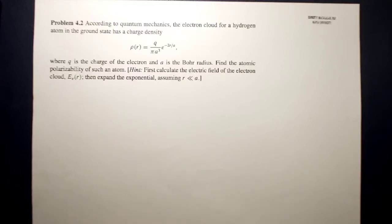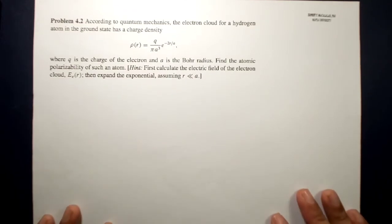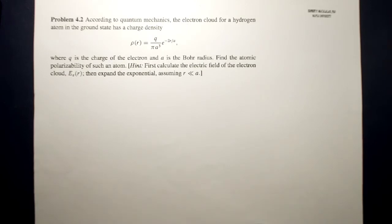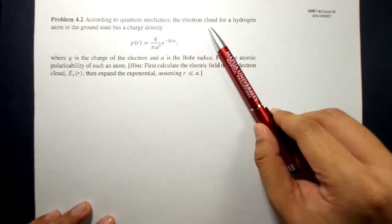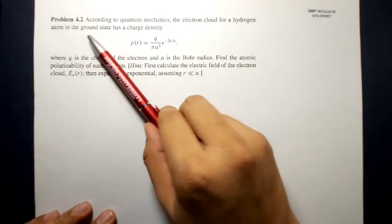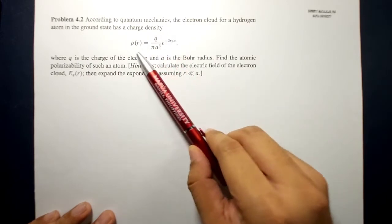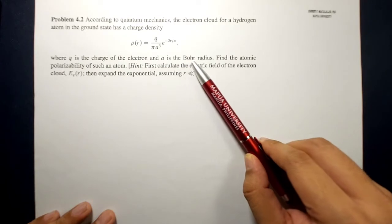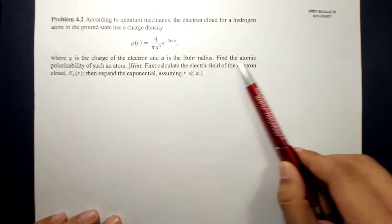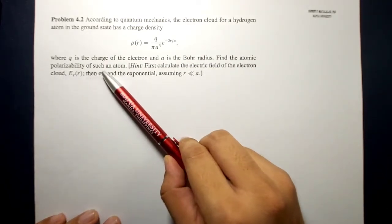What's up guys, it's me, Sir Ernest, and today we're going to discuss a sample problem involving the induced dipole moment in an atom due to an external electric field. The problem reads: according to quantum mechanics, the electron cloud for a nitrogen atom in the ground state has a charge density equal to this equation, where Q is the charge of the electron and A is called the Bohr radius. The question is: find the atomic polarizability of such an atom.